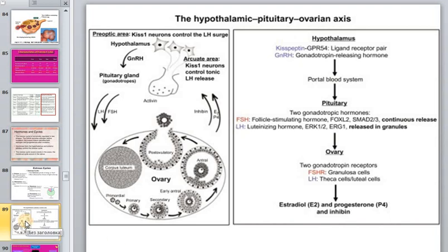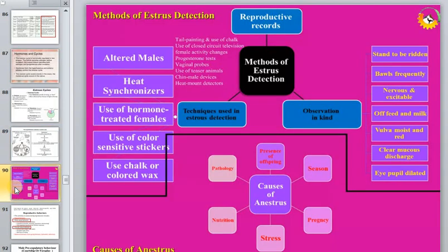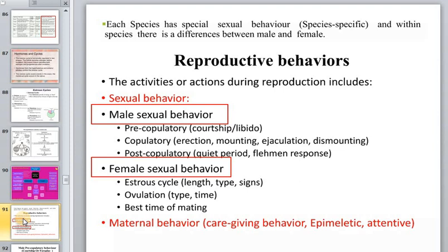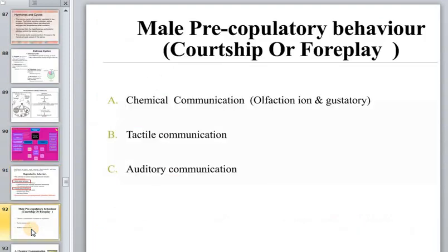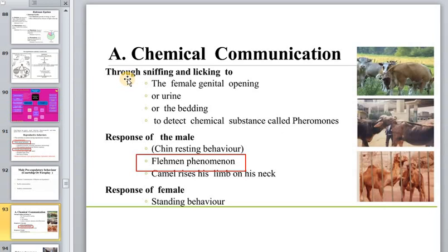Now we move from the basics of knowledge to reproductive behavior directly. Each species has special sexual behavior that is species-specific, and within species there are differences between male and female. We start with male sexual behavior: pre-copulatory, copulatory, and post-copulatory. Male pre-copulatory behavior can consist of chemical communication, tactile communication, and auditory communication, as seen in birds.